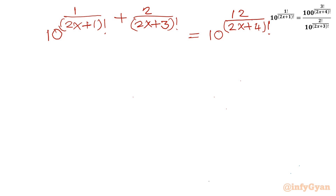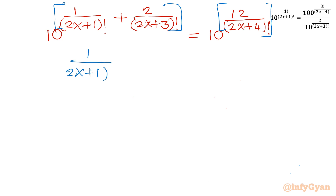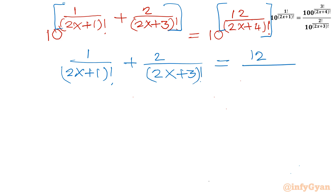Now both sides have the same base, so we equate the exponents. This gives us: 1 over (2x+1) factorial plus 2 over (2x+3) factorial equal to 12 divided by (2x+4) factorial.